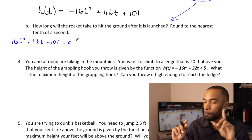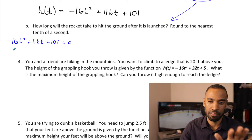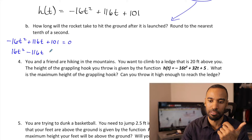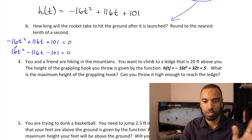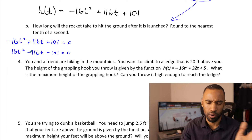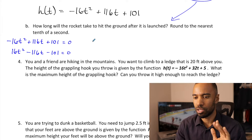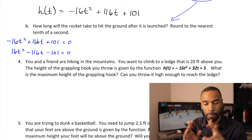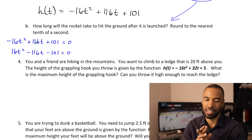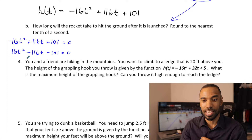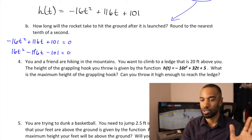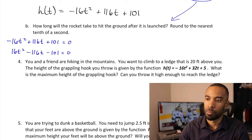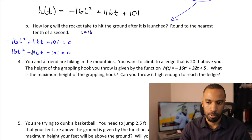Setting h(t) = 0: negative 16t squared plus 116t plus 101 = 0. No common factor. Dividing everything by negative 1 to make the quadratic coefficient positive: 16t squared minus 116t minus 101 = 0. Not factorable — this is a quadratic formula problem. With a = 16, b = negative 116, c = negative 101, start with the discriminant: b squared minus 4ac = negative 116 squared minus 4 times 16 times negative 101.